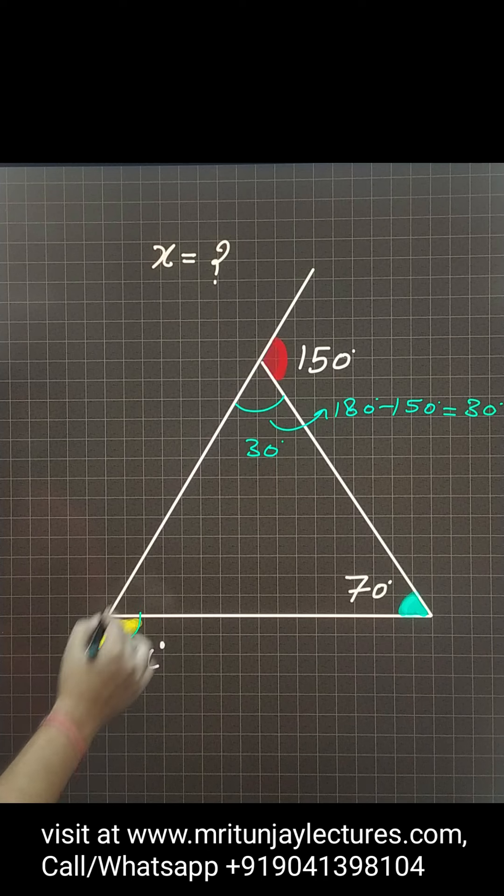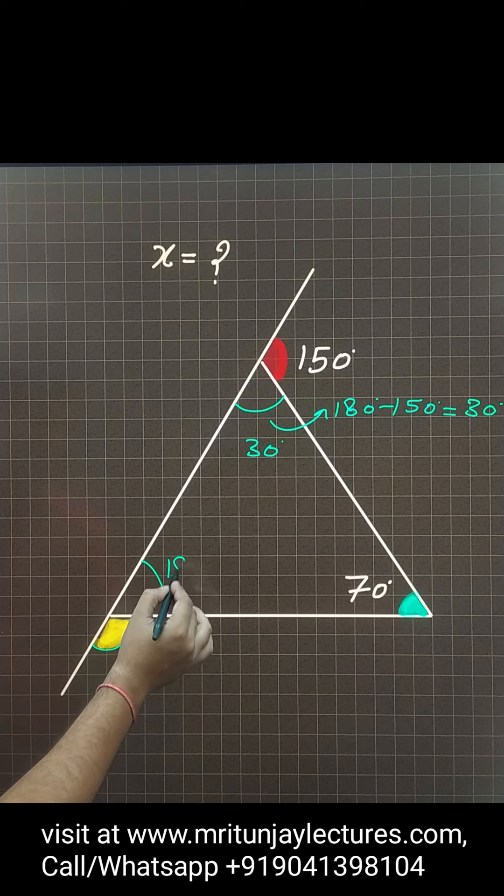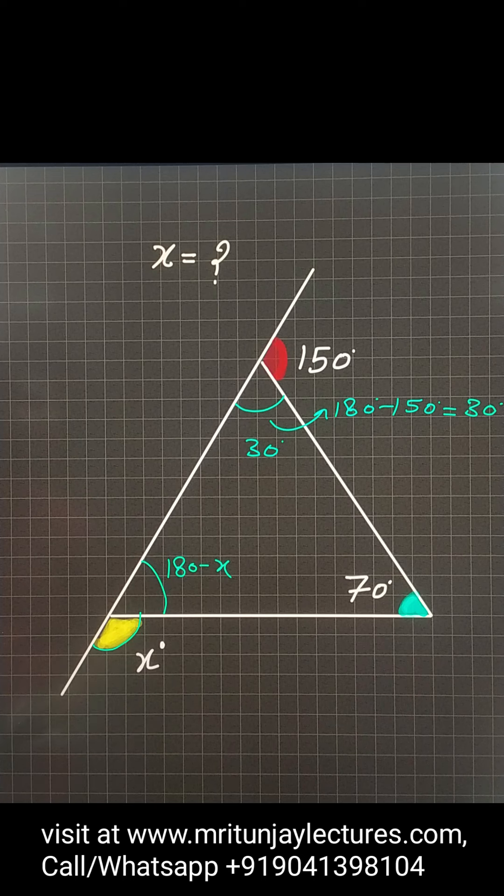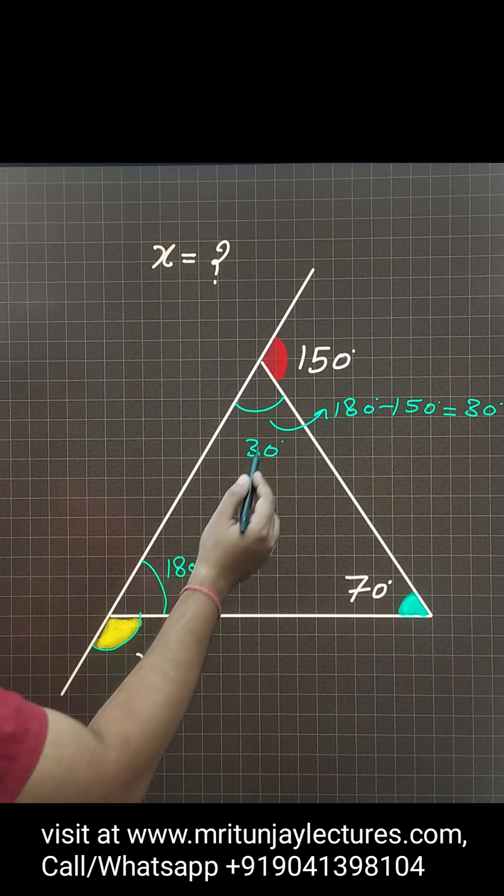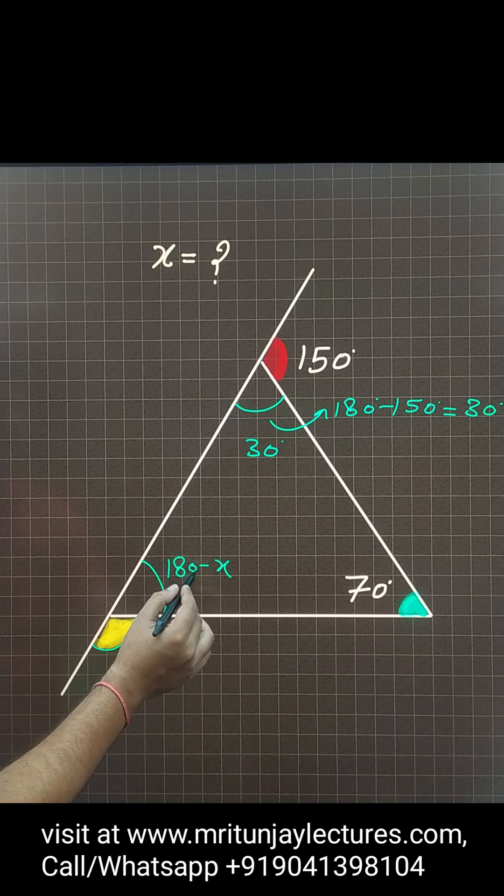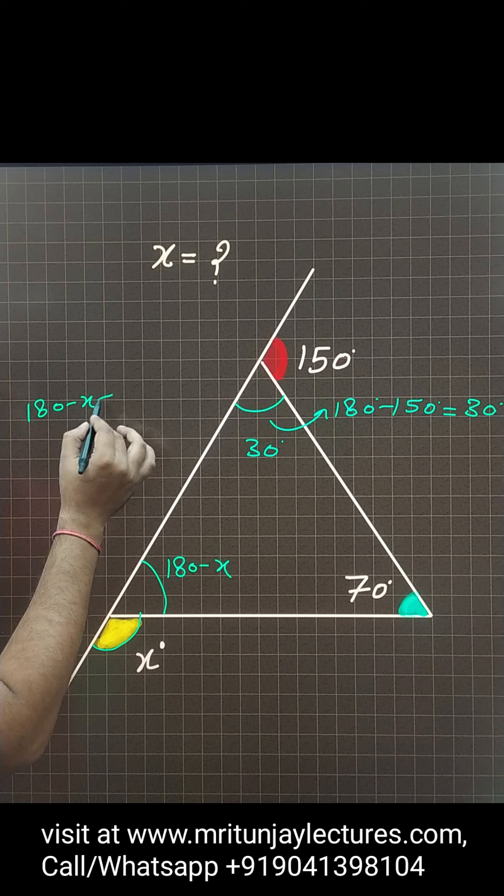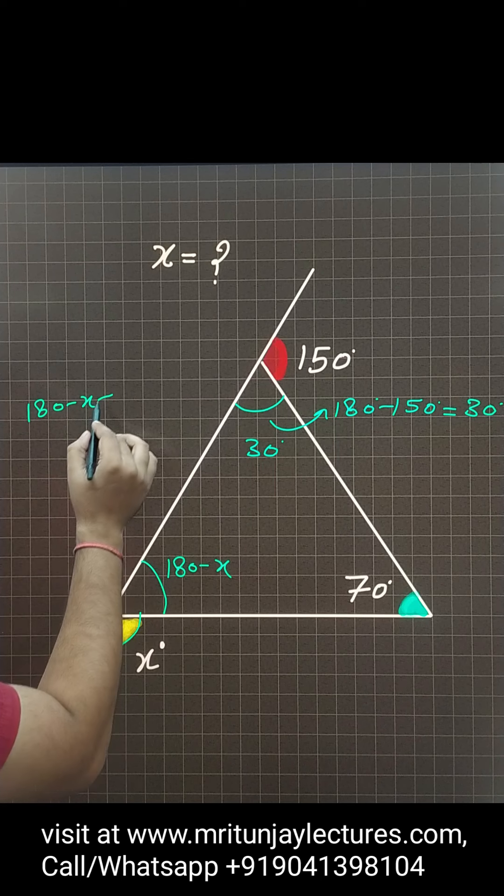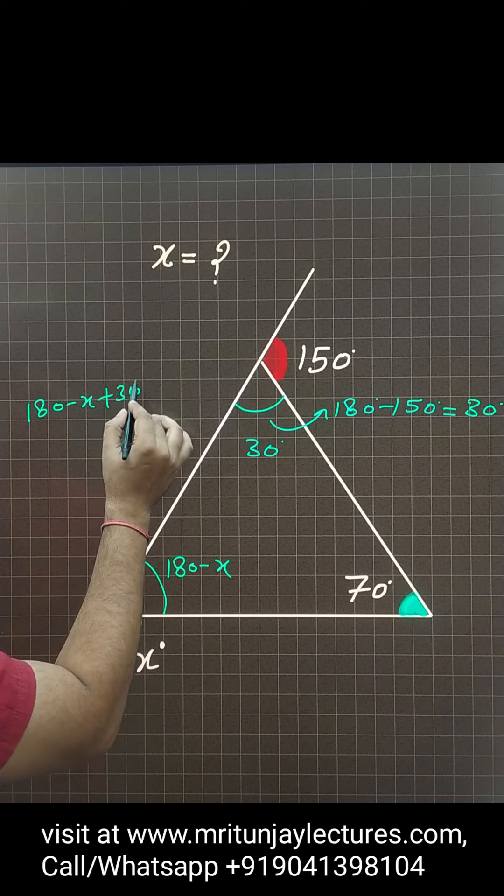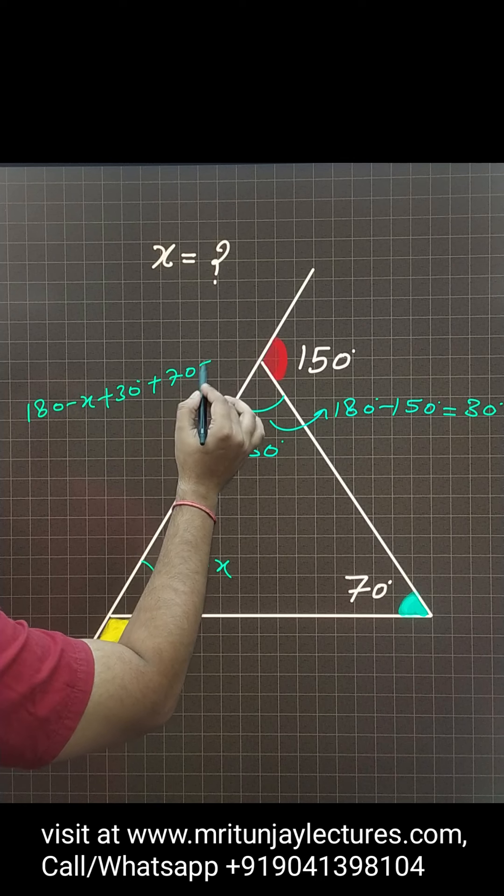That is x. So what about that angle? 180 minus x. Sum of these three, this one, this one, this one. 180 minus x plus 30 plus 70, this will equal 180.